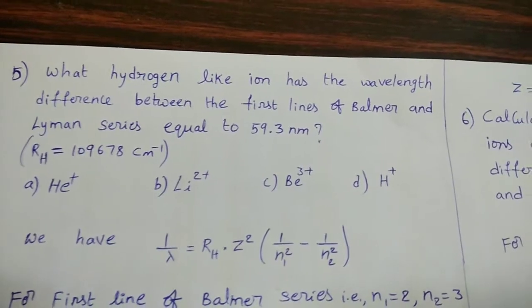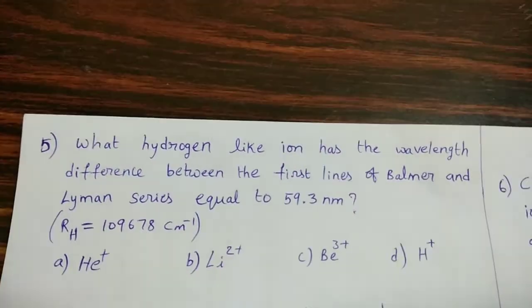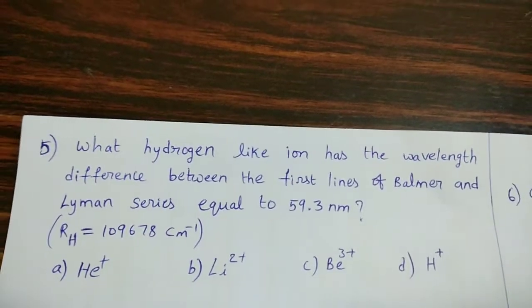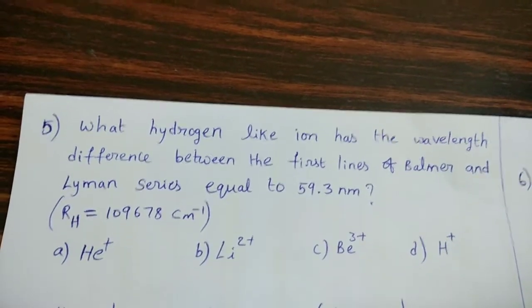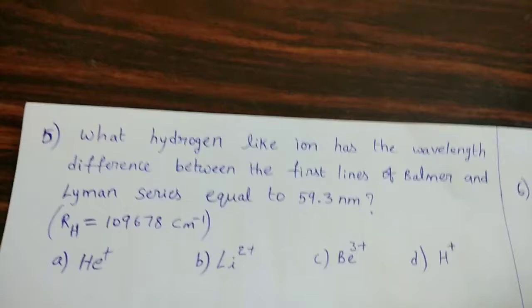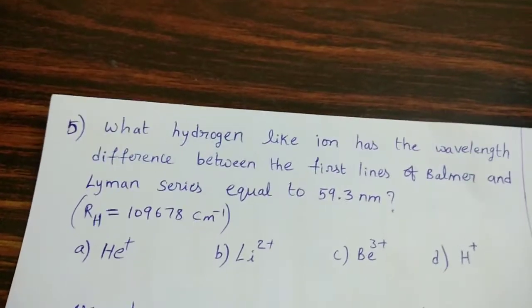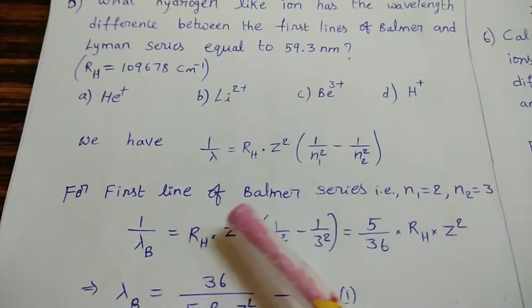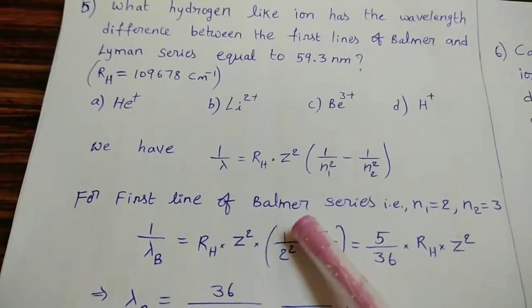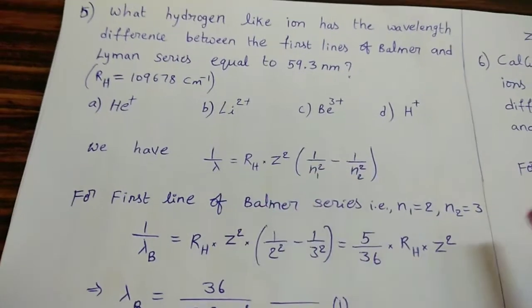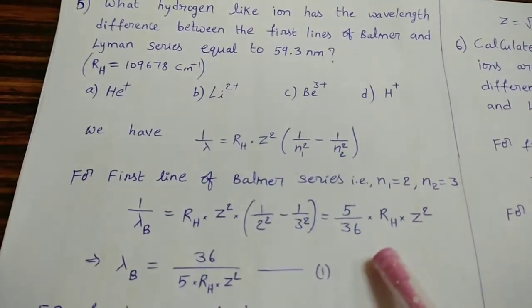See the next question. What hydrogen-like ion has the wavelength difference between the first lines of Balmer and Lyman series equal to 59.3 nanometers? We should find which ion satisfies this condition. Using the Rydberg equation, for the first line of Balmer series, N₁ = 2 and N₂ = 3, since Balmer series has N₁ = 2 and first line means N₂ = 3. Substitute into the equation to get the Balmer wavelength.